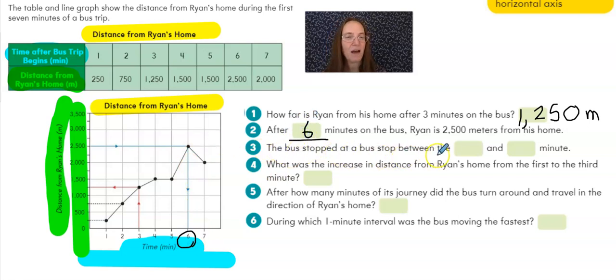The bus stopped at a bus stop between the blank and blank minutes. This one is tricky. Well, let's see. Here is the first minute of his trip. And here's the second minute. The distance is growing. He's going away from his home. Here, he's still going away from his home. And maybe not as quickly, but between three and four minutes, he's still going away from his home. Between minutes four and five, he does not get any farther away from home. So I'm guessing that would be a bus stop. Isn't that interesting? We can actually read the picture to let us know when it's standing still.